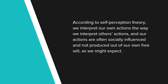According to self-perception theory, we interpret our own actions the way we interpret others' actions, and our actions are often socially influenced and not produced out of our own free will as we might expect. In day-to-day life, we often assume that other people are behaving in a particular way because they have a certain kind of attitude or their personality is a certain way. According to this theory, just as we predict others' attitudes from their behavior, we can also assess our own attitude depending upon the type of behavior we are expressing.